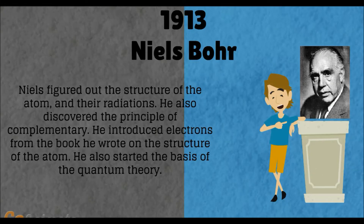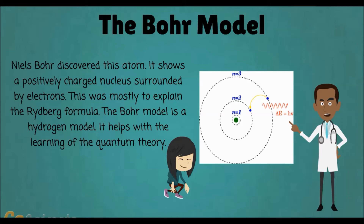1813, Niels Bohr. Niels figured out the structure of the atom and their radiations. He also discovered the principle of complementarity. He introduced electrons from the book he wrote on the structure of the atom. He also started the basis of the quantum theory. Niels Bohr discovered this atom model — it shows a positively charged nucleus surrounded by electrons. This was mostly to explain the Rydberg formula. The Bohr model is a hydrogen model and helps with the learning of the quantum theory.